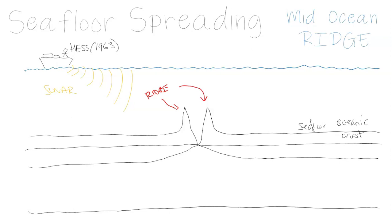So we have the crust, we have the lithosphere right here, and this makes up our plate — which we'll get to later. The oceanic crust is mostly basaltic, so I'm putting basalt here on this side as well. The basalt is very important because Hess is going to find evidence, and other scientists will use this rock as evidence to see the movement. The ocean crust is very thin.